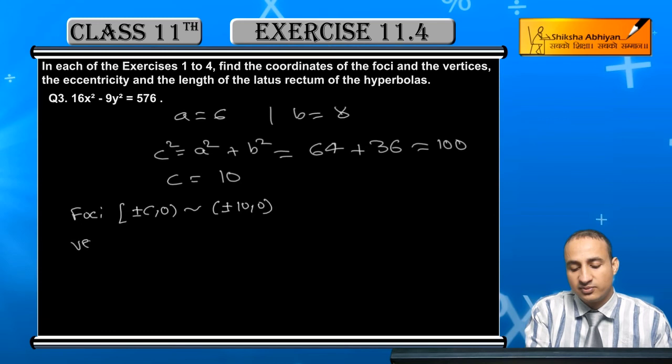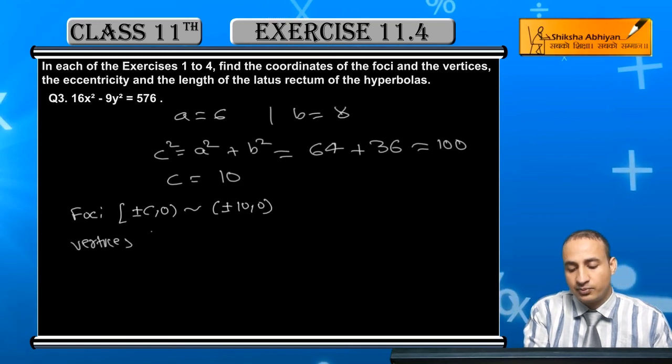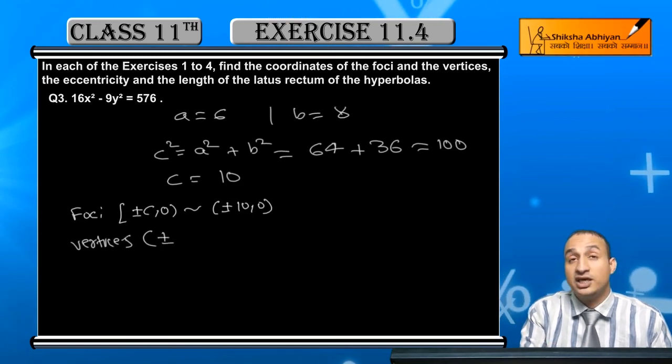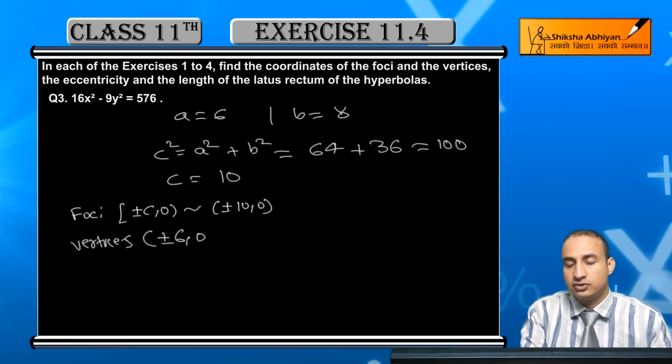Now if we discuss vertices, the vertices here, vertices has plus-minus a, 0. So this value is 6, 0. In this case, what will happen here?